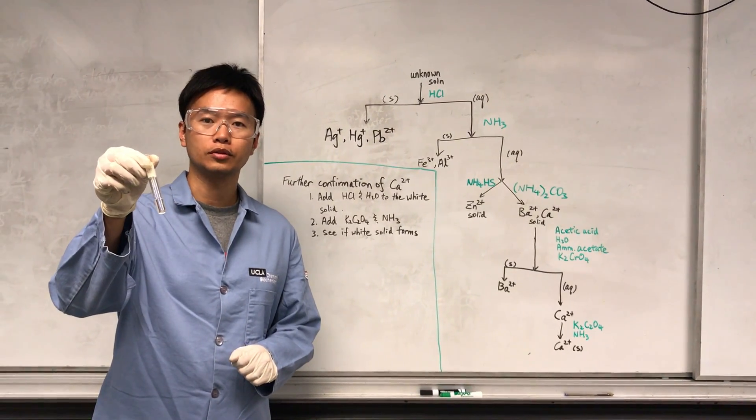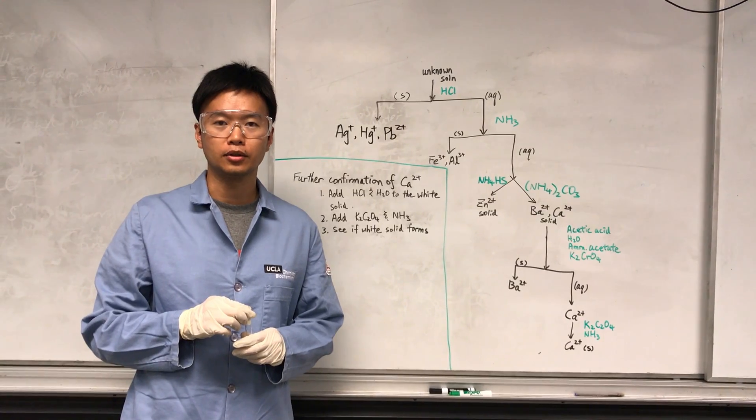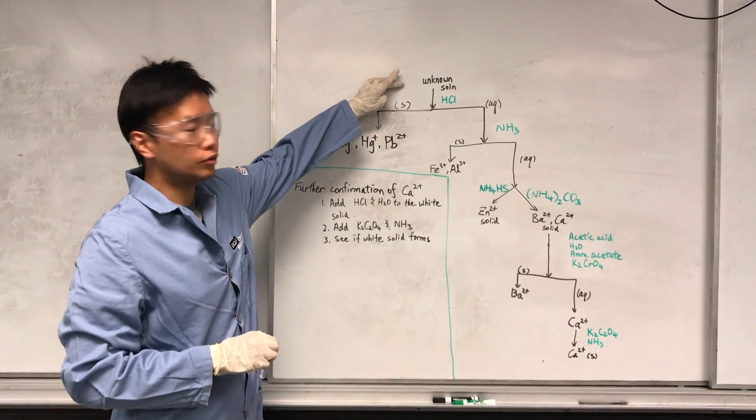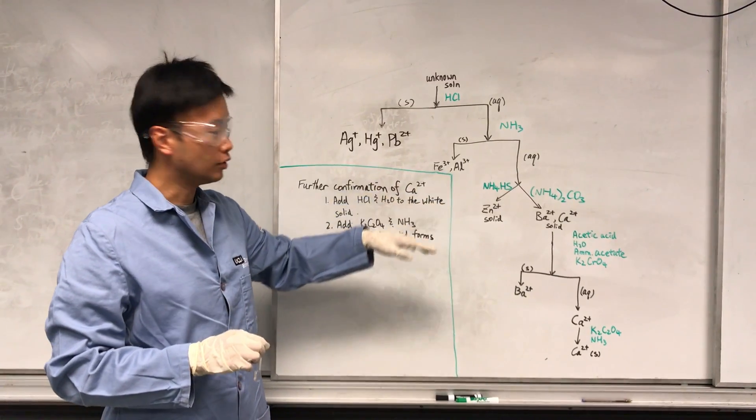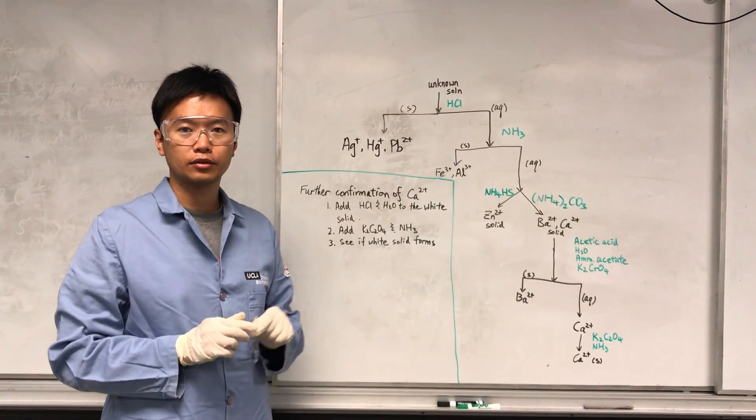Okay, so I have a metal cation solution in the test tube, and I'm going to test what kind of cation is in this particular solution. So what I'm going to do is go through a series of tests. Hopefully I can identify the metal cation inside this test tube.